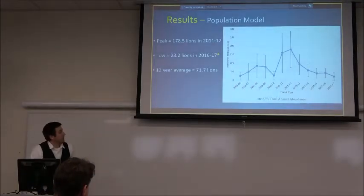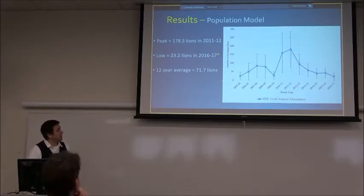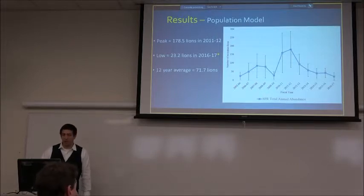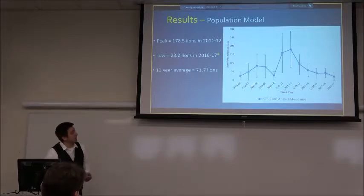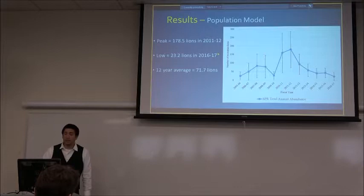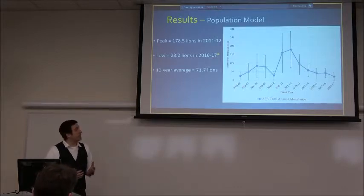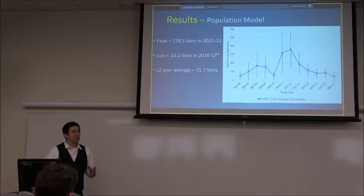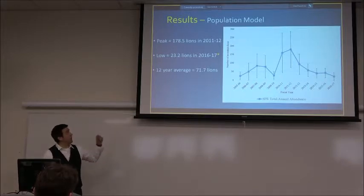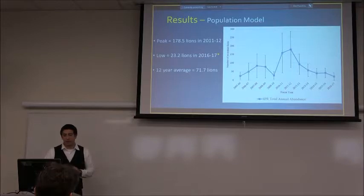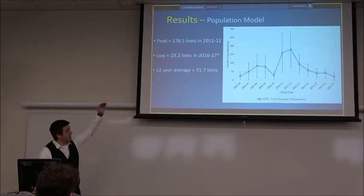The population model shows a general increase followed by a general decrease. The peak occurred around 2011–2012, estimated at approximately 180 lions. The most recent estimate is about 23, though I consider that too low — likely closer to 40 or 50 due to some remaining issues with the program. Regardless, the takeaway is that the population is declining.